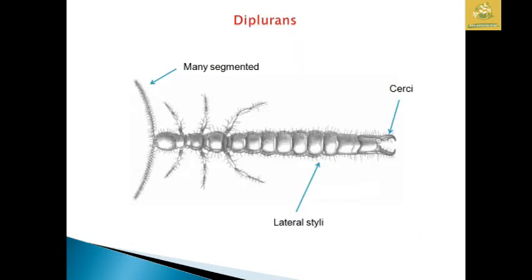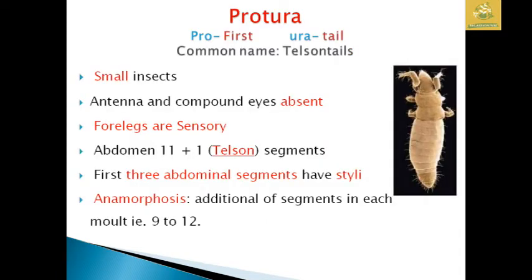You can see the clear skeletal picture of Diplura where they have multi-segmented antennae with two cerci and lateral cerci present. Next is the order Protura, where 'Proto' means first and 'Ura' means tails. Their common names are Telosomata. They are small insects and compound eyes as well as antennae are absent.